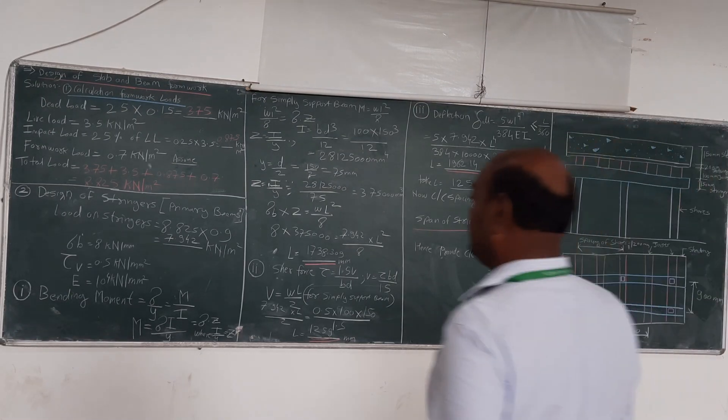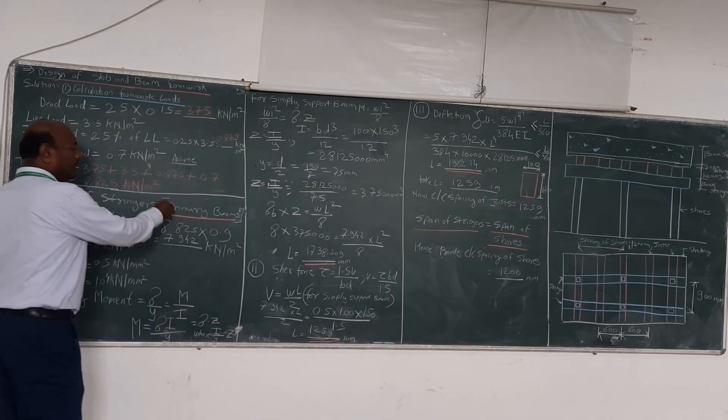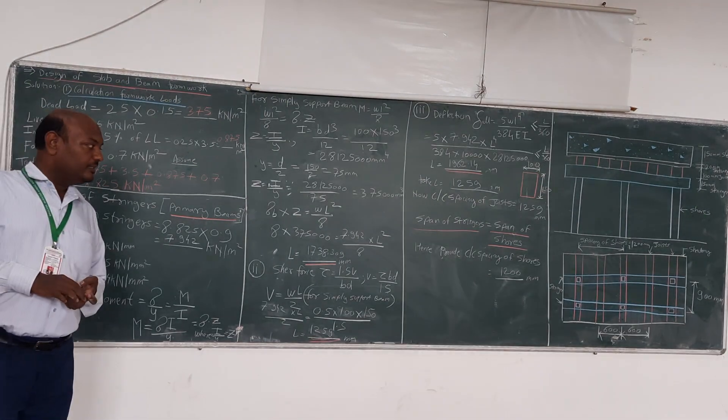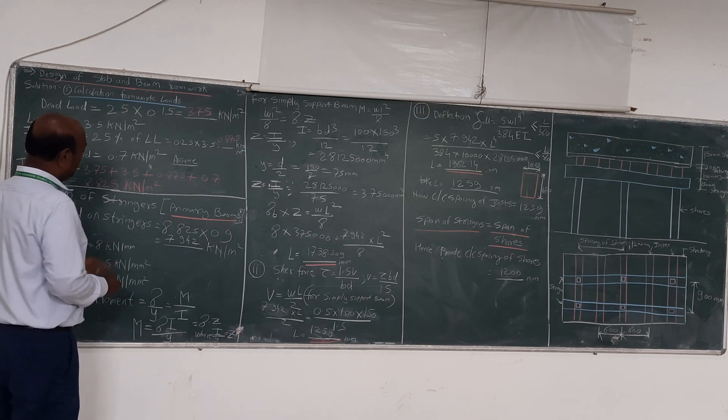Now we design the Stringer, that is the primary beam. Stringer is also known as the primary beam. We have designed the joist and we have designed the Stringer. Now we will start the design of the Stringer beam here.